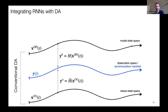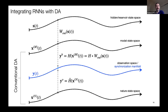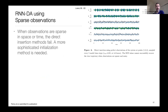In a typical DA system we have the model trajectory and the unknown nature trajectory. We sample nature via observations and bring them to observation space. We add a fourth trajectory — the hidden reservoir state — and apply a readout mapping back to model space, then use a composition of the observation operator and readout applied to the hidden reservoir space. Now we can compare in the same space. This is the main innovation enabling data assimilation to be applied to the recurrent neural network structure.